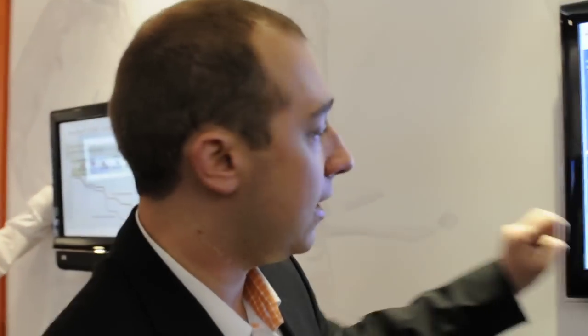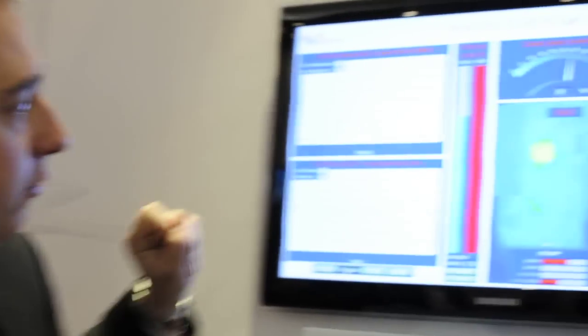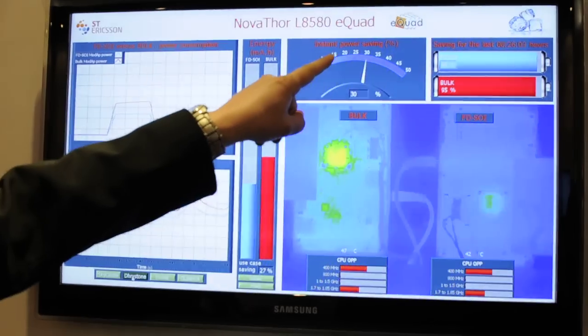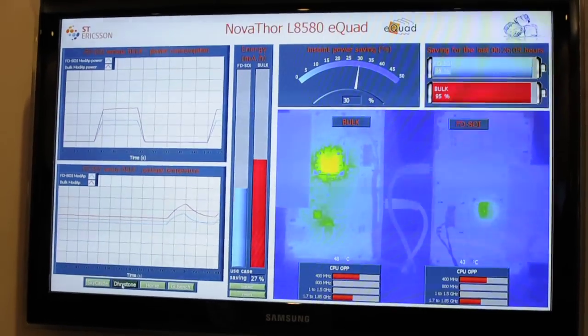I'm starting again the dry stone test, and you can see that we have a saving of around 30%. Can you explain what the two platforms are again?